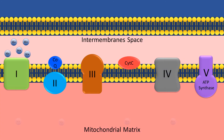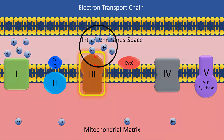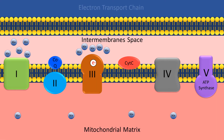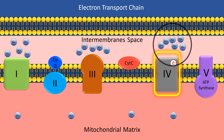Electrons from CoQ are passed to complex 3, which gets supercharged and creates sufficient energy potential to pump a proton from the mitochondrial matrix to the intermembrane space, helping to increase the proton gradient. Subsequently, complex 3 will pass its electrons onto cytochrome C, which in turn passes the electrons to complex 4. As a result of receiving the electrons, complex 4 gets supercharged and uses the energy gained to pump yet more protons from the mitochondrial matrix into the intermembrane space, increasing the proton gradient further.